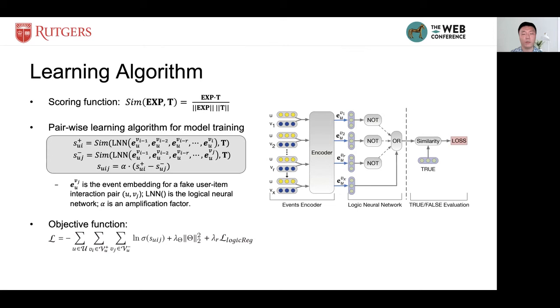Here, we apply a pairwise learning algorithm for training the model. For each observed user-item interaction, we sample one item which the user has never interacted. We denote it as Vj here. Here, we use this Vj to form a fake interaction.